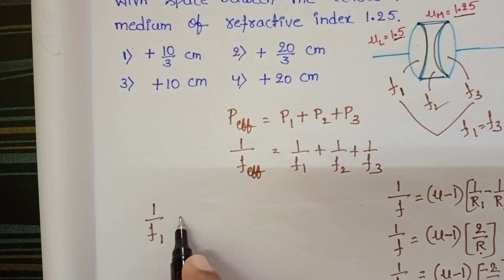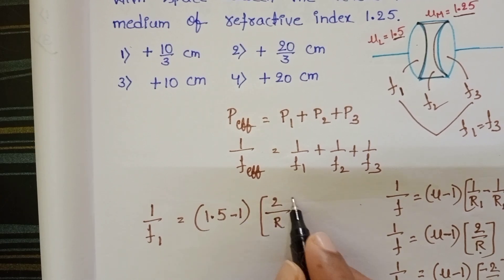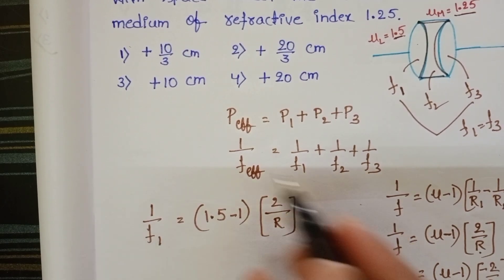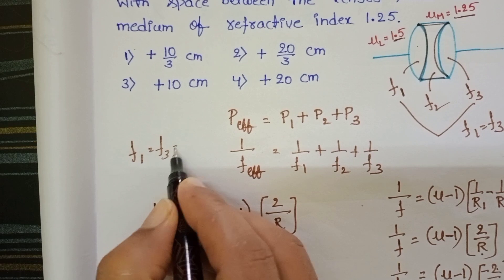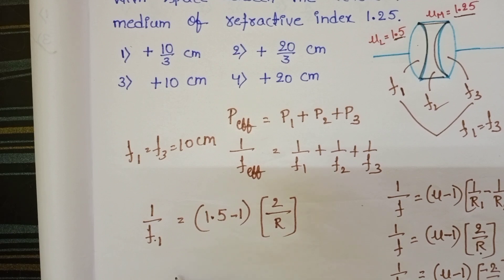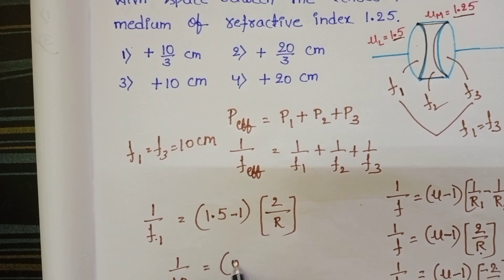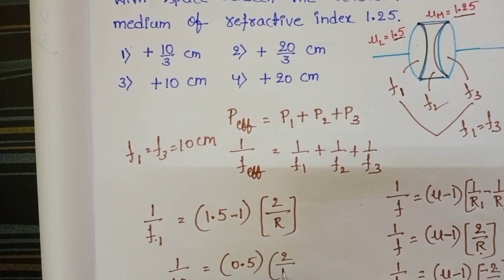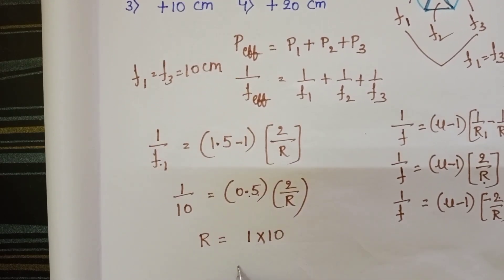1/f1 = (1.5 - 1) × 2/R = 0.5 × 2/R. We know the focal length of the biconvex lens is 10 cm, so f1 = f3 = 10 cm. Substituting: 1/10 = 0.5 × 2/R. Solving, R = 0.5 × 2 × 10, so the radius of curvature is 10 cm.